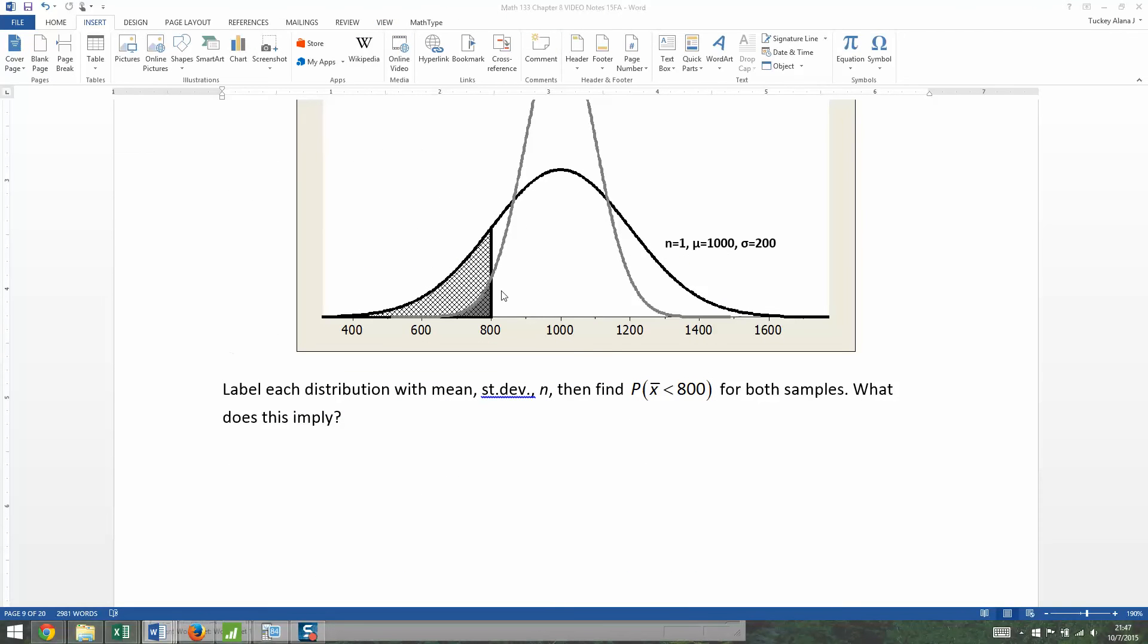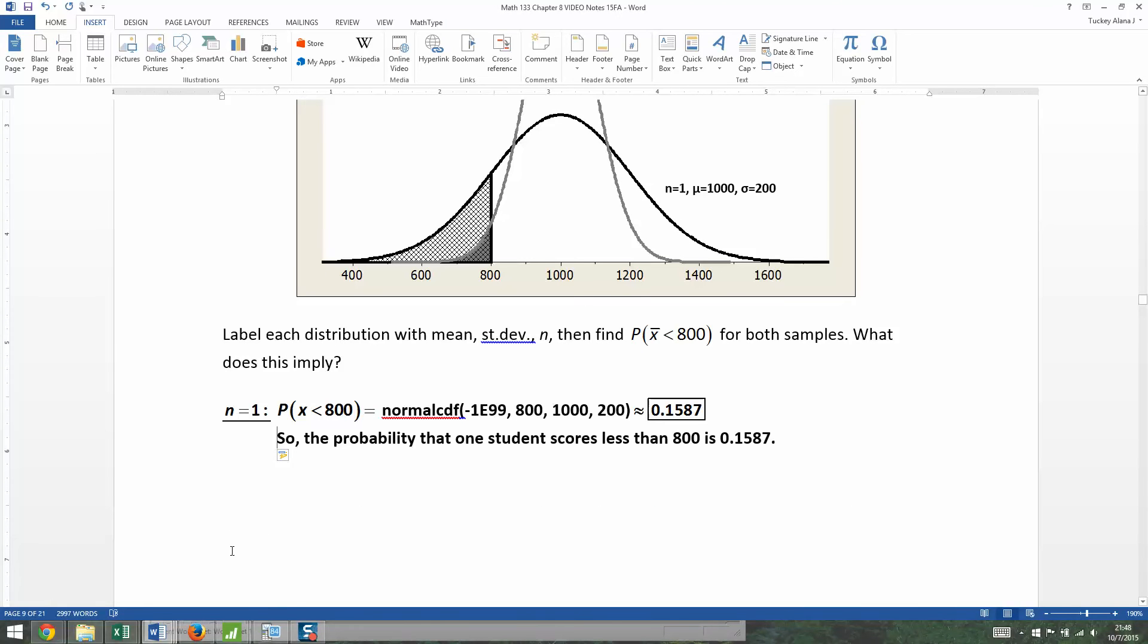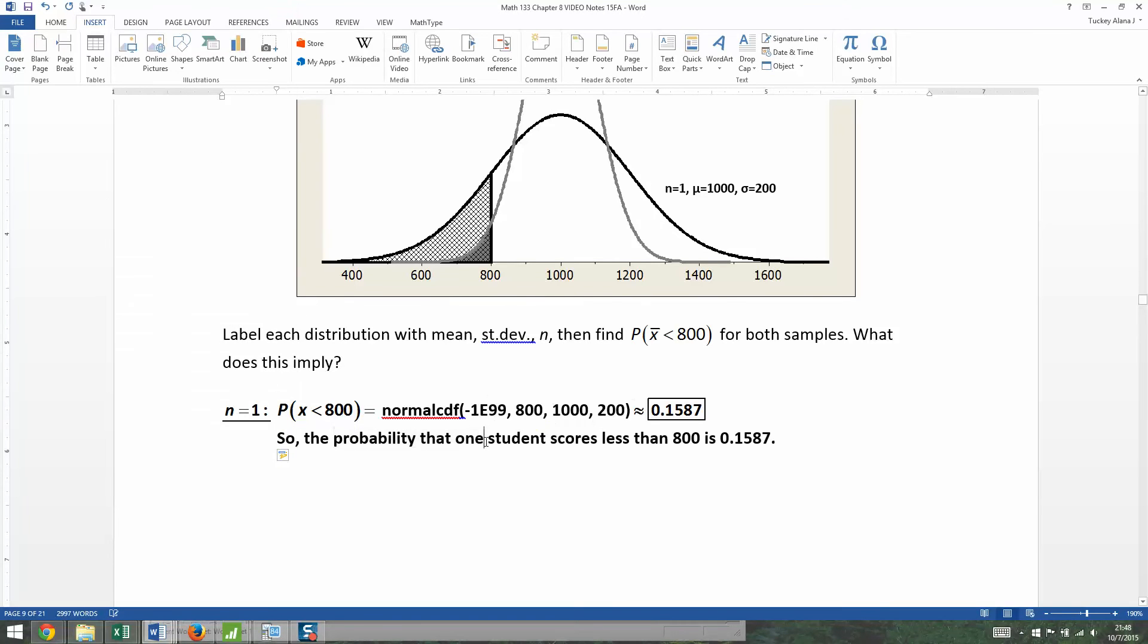So n equals 1. I want to use normal CDF. I'm going to start over here on the left-hand edge, which is negative 1 E 99. I'm going to go all the way up to 800. I'm going to stop right there. My mean is 1,000. I'm on the black curve. My mean is 1,000, and my standard deviation is 200. So clear this out. Distribution, which is above my variables button. Number two, normal CDF. There's negative 1 E 99, 800, 1,000, 200. Go to paste and press enter. There you have it, 0.1587. And that means the chance that one random student scores less than 800 is 0.1587.